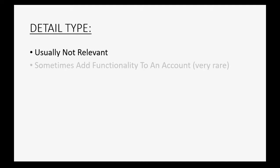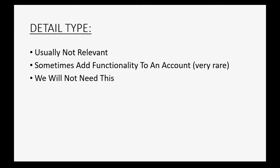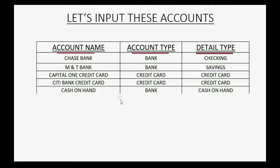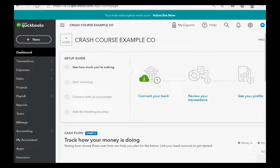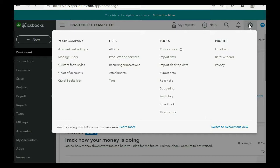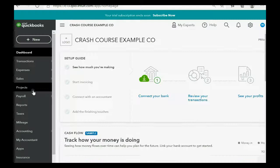The detail type is another piece of data that's usually not relevant — sometimes it adds functionality to an account, but that's very rare. We will not need this in the QuickBooks for home finance course, but we must tell QuickBooks Online the detail type or it will not allow us to save the account. There are two ways to open the chart of accounts: click the cog wheel in the top right and go to Chart of Accounts, or from the left panel menu click Accounting > Chart of Accounts.